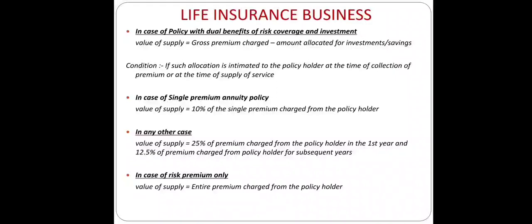Condition: the allocation must be intimated to the policy holder at the time of collection of premium. If it is a single premium annuity policy, Value of Supply = 10% of the single premium charged. For other cases: 25% of premium charged in the first year, and 12.5% in subsequent years. In case of risk premium only, Value of Supply = entire premium charged from the policy holder.